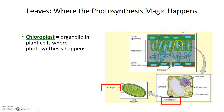If we zoom in further into these mesophyll cells, we'll see a cell that looks something like this — a typical plant cell containing a nucleus, mitochondria, ribosomes, and other organelles, as well as a specialized organelle particular to plants and not animal cells, known as a chloroplast.